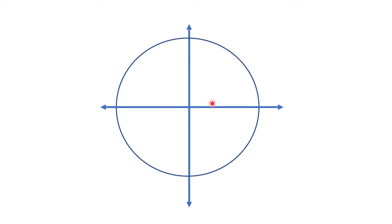Let's say this is the center of the circle. From the center to this point on the circle, we can say that the coordinate would be (1, 0). For this point, this would be (0, 1). Here would be (-1, 0). And this point would be (0, -1).